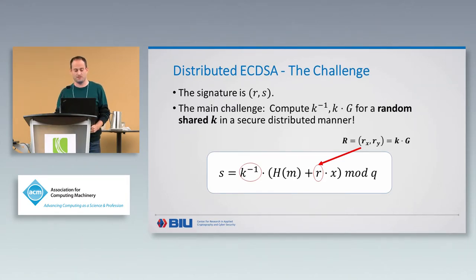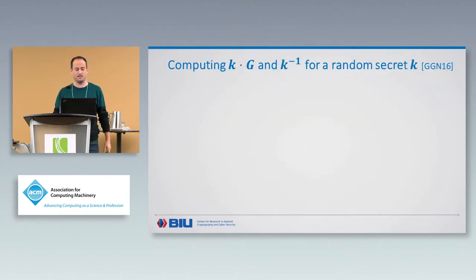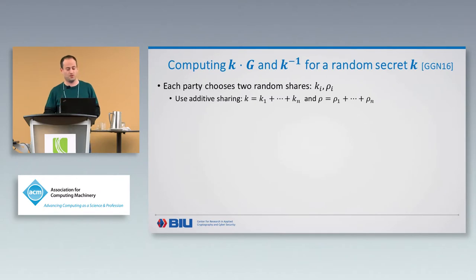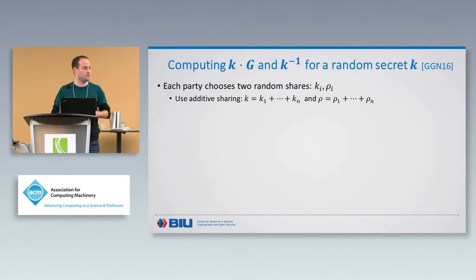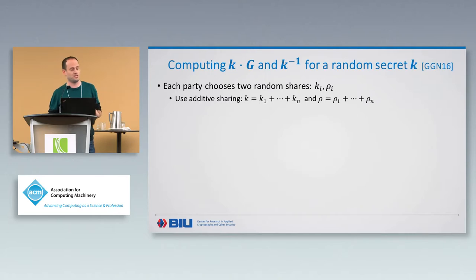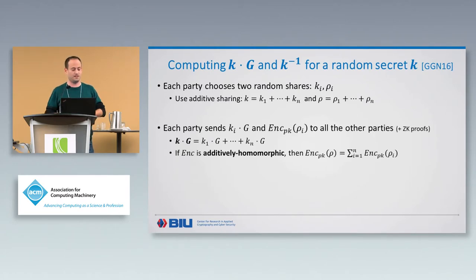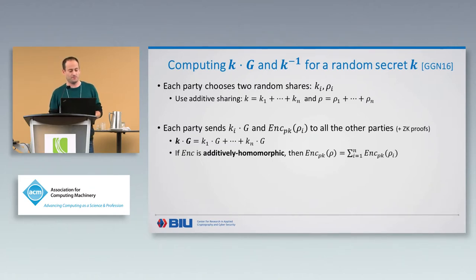In the work of Gennaro et al., which is the starting point of our protocol, they presented the following approach. Each party chooses two random shares Ki and Roi, using additive sharing where the secret is just the sum of the shares. The protocol proceeds by having each party send Ki times G to the other parties, and also sending an encryption of Roi to all other parties. It's then easy to compute K times G by summing all the Ki times G values.